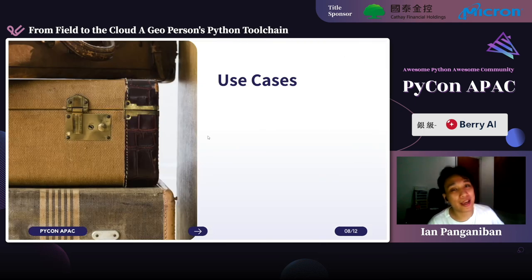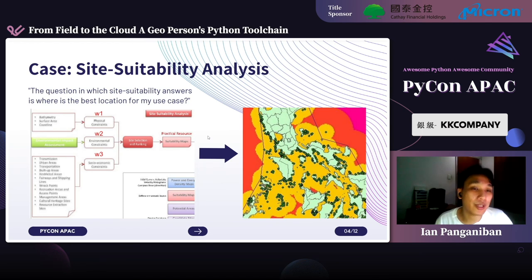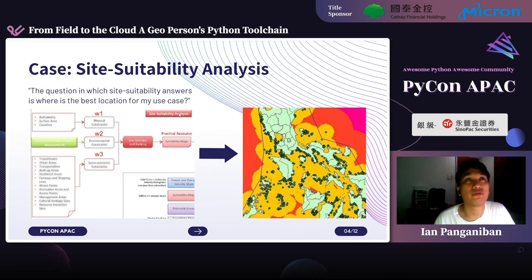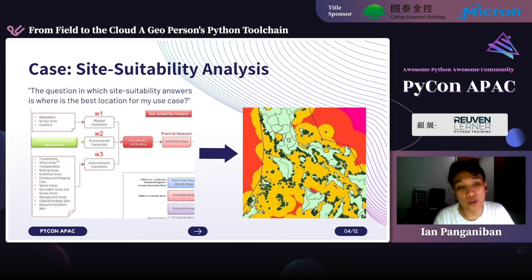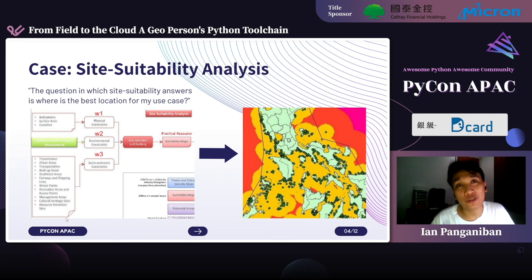Now for some use cases applying the workflow. First is site suitability analysis — a project from about seven years ago where we identified potential resources for ocean renewable energy. We had different layers and datasets, did some preprocessing, combined them with weighted scores, and produced a suitability map. The workflow is simple; the hard part is gathering all the data, as not all of it is free and it may take six months of fieldwork.